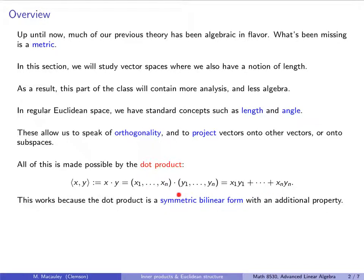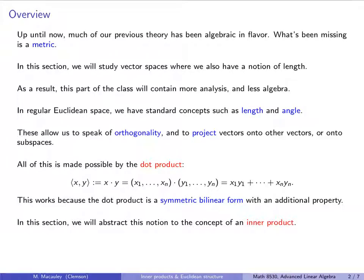The reason why the dot product has all this power is because it is a symmetric bilinear form with one additional property that we will get into shortly. In this section, we will abstract the notion of the dot product to a more general concept called an inner product, which will be any symmetric bilinear form with this additional property.